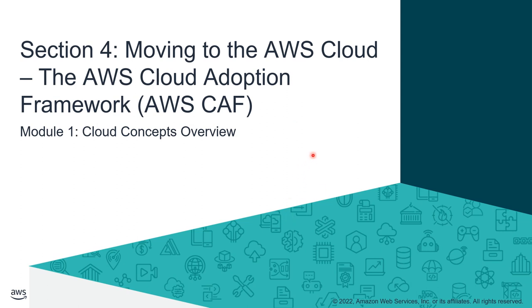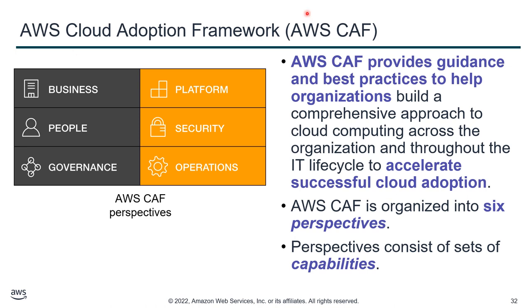The next topic is moving to AWS cloud using the Cloud Adoption Framework (CAF). The CAF describes how to migrate from traditional infrastructure to the cloud and what fundamental changes are needed — from a business perspective, a technology perspective, and what things we can do on the cloud. Every organization's cloud adoption journey is quite unique, depending on the existing organization.